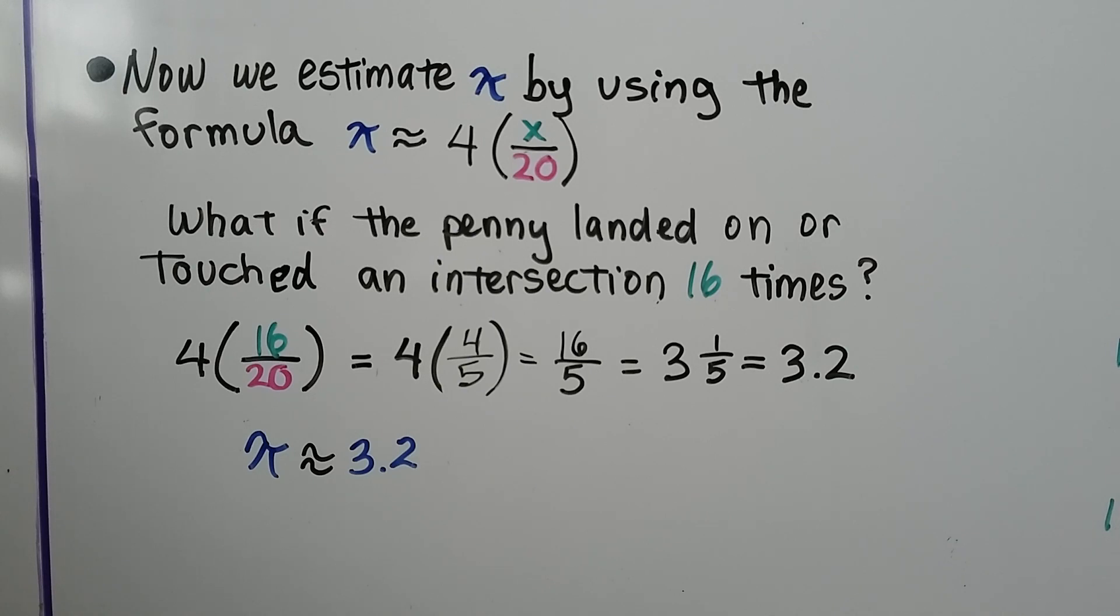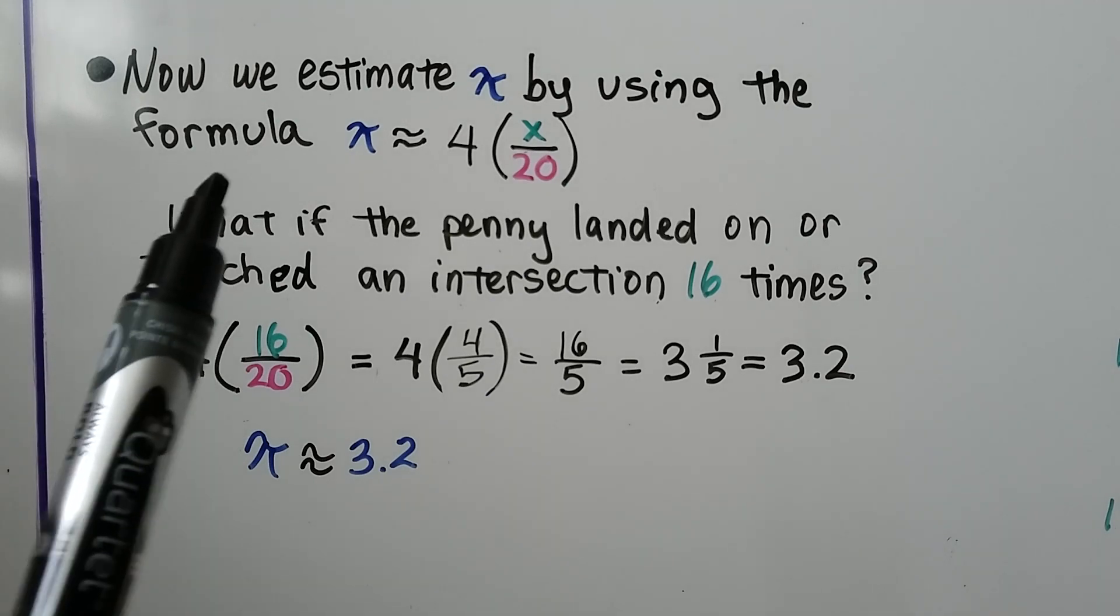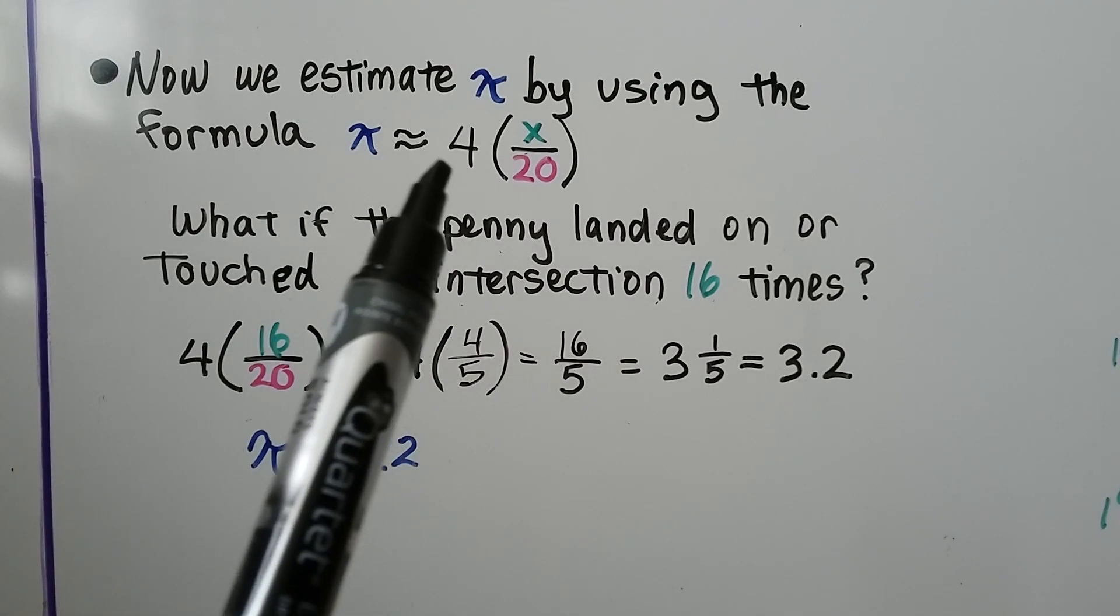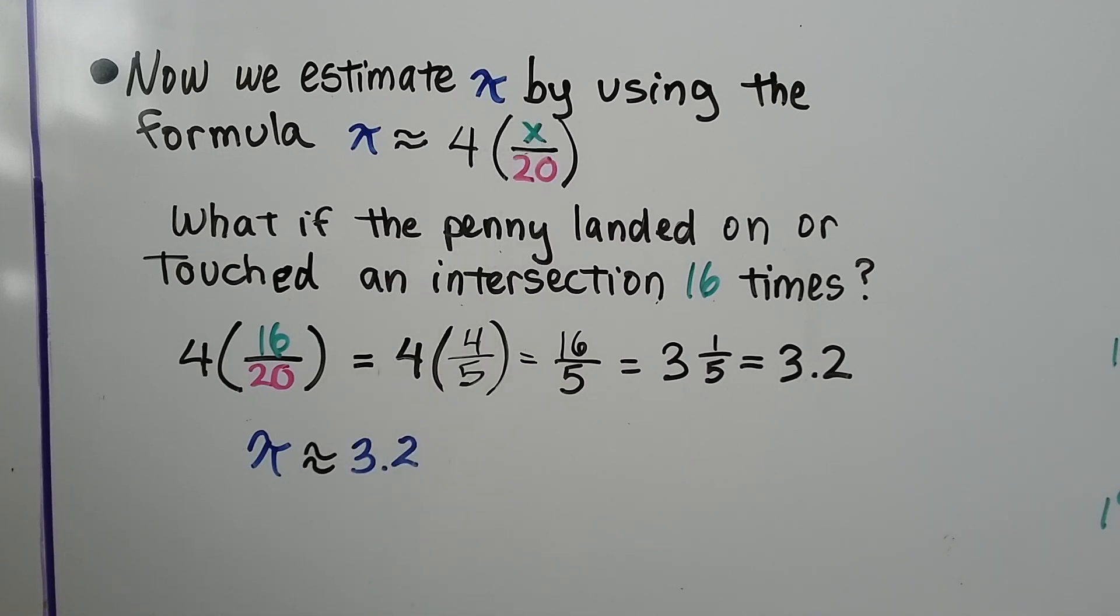Once we've thrown our penny twenty times and we've counted how many times it has landed touching or covering an intersection out of the twenty, we use this formula to estimate pi. It's going to be four times the quotient of x and twenty.